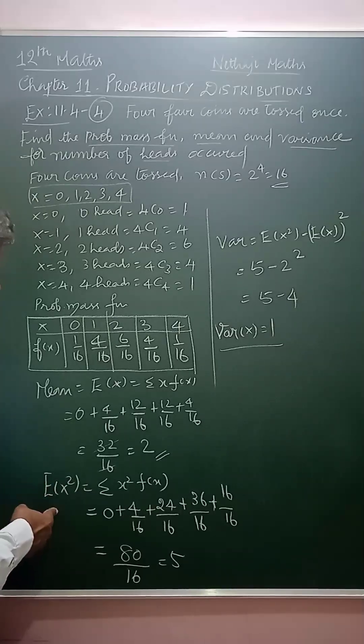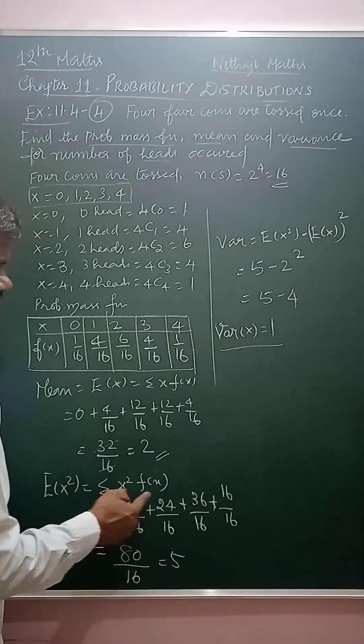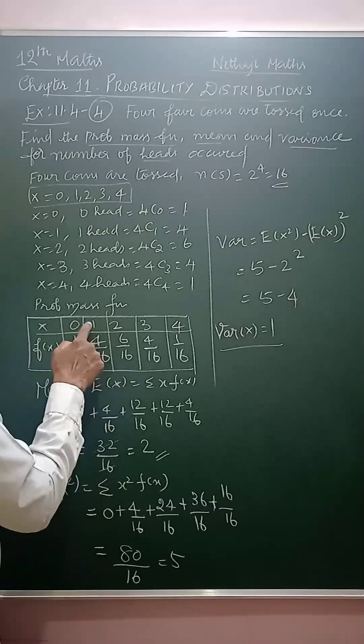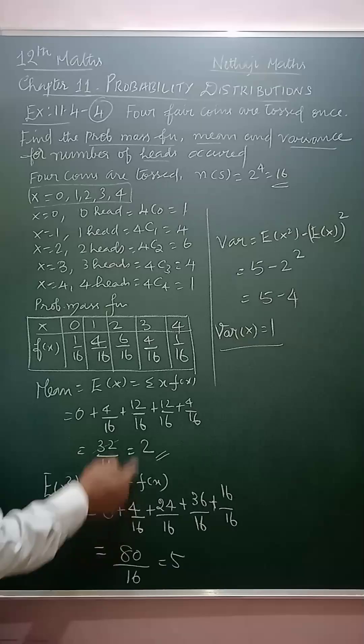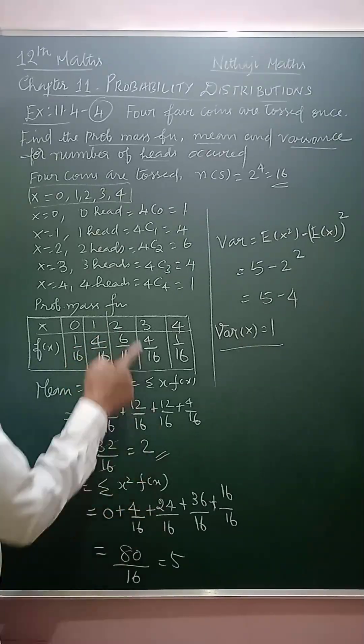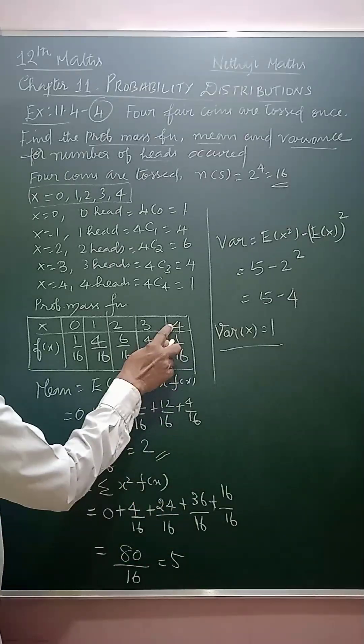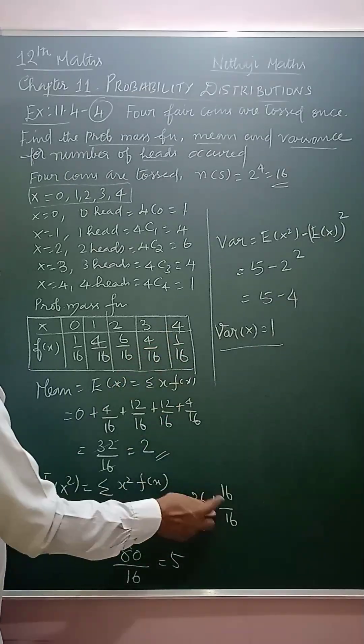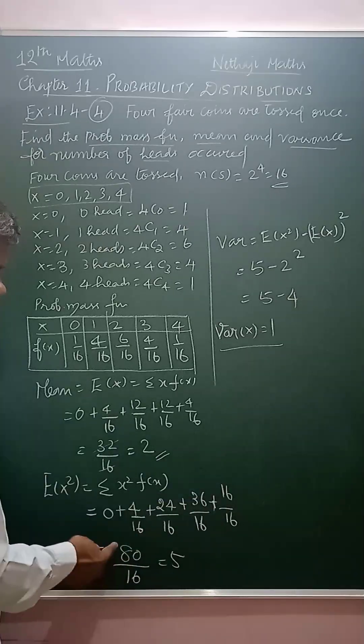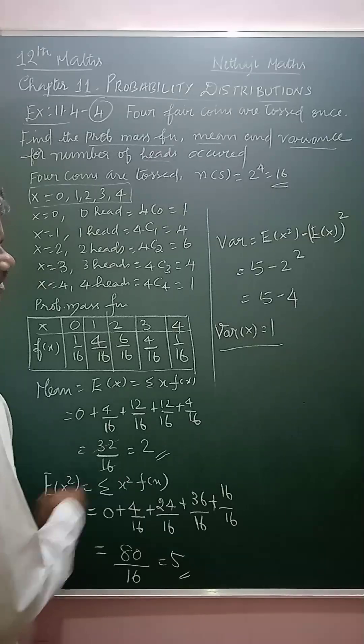Now, we have to find the E of x square to find the variance. E of x square equal to summation of x square into f of x. 0 square is 0. 1 square into 4, 4 by 16. 2 square is 4, 4 into 6 are 24 by 16. 3 square 9, 9 into 4, 36 by 16. 4 square is 16, 16 into 1, 16 by 16. So, you can add the numerator, you will get 80 by 16. Cancel, you get 5. So, this is the value of E of x square.